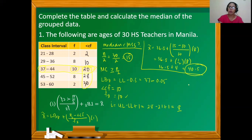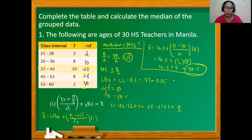The median is 40.5. This means 50% of the observations — the teachers — are younger than 40.5 years old, while the other 50% are older than 40.5 years old.